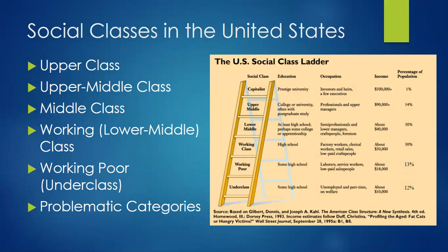The upper class makes up just 1% of the U.S. population, and its total net worth is greater than that of the entire other 99%. The upper class gains membership in various ways. Some, like the Rockefellers and Carnegies, came into old money through family fortunes.